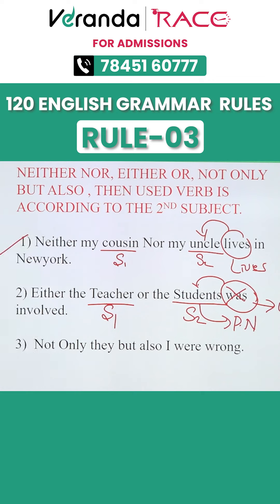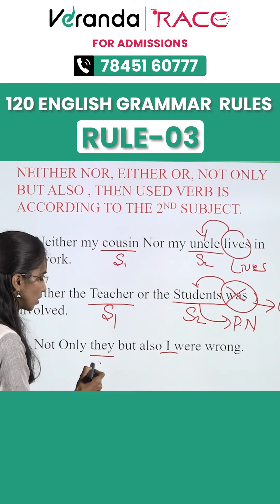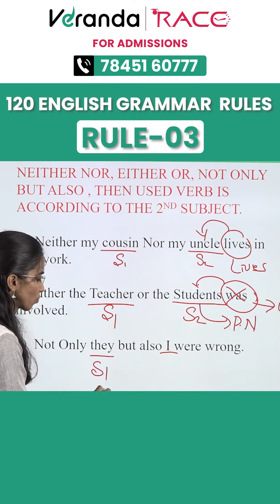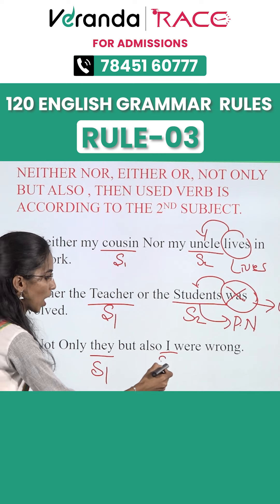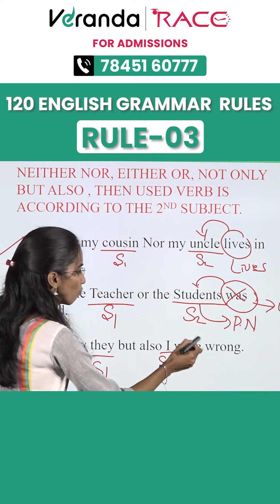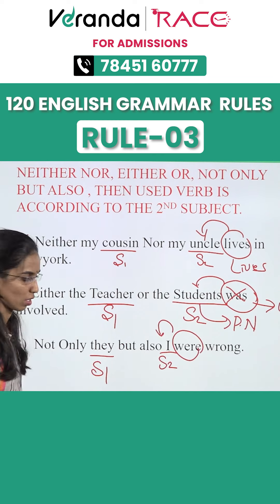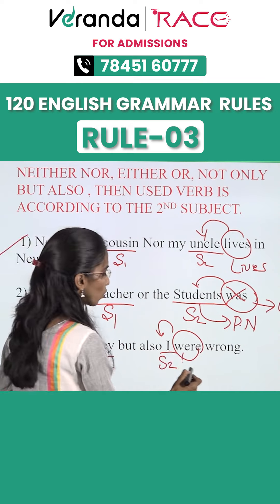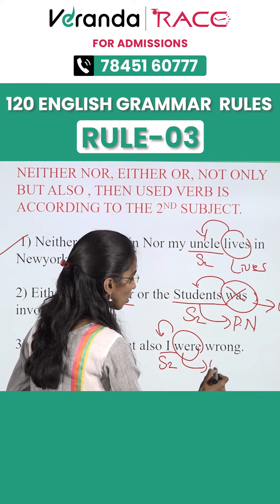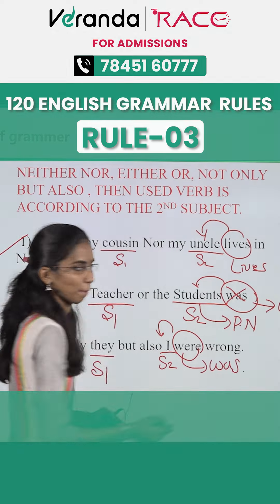The third example: not only they but also I were wrong. They is subject 1 and I is subject 2. Since I is in singular form, we have to use 'was' instead of 'were'.